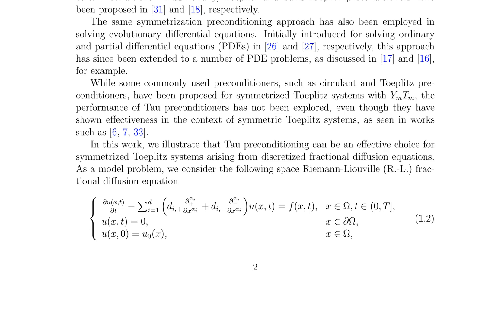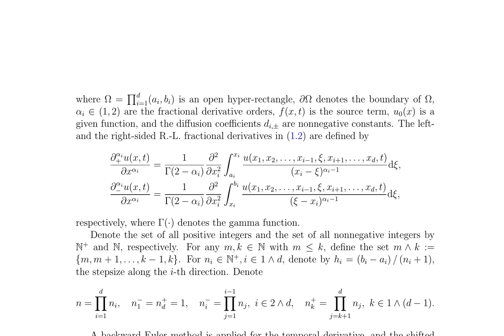They consider a model problem: the space Riemann-Liouville (RL) fractional diffusion equation, a system of partial differential equations with fractional derivatives. Discretization of this equation results in a Toeplitz system, which is then symmetrized using the anti-identity matrix Y_M. The problem is discretized using a backward Euler method for the temporal derivative and the shifted Grünwald scheme for the space fractional derivatives, yielding a linear system A·u equals ν·u_{k-1} plus f_k.